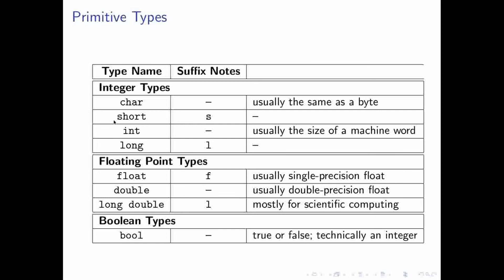So, for instance, short has to be at least as precise as char, and int has to be at least as precise as short.